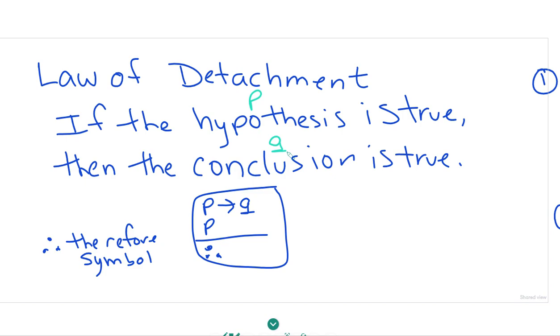We write this like this. If P, if the hypothesis, is true, then Q, the conclusion, is true. This says P is true, therefore Q is true. So we're going to use the law of detachment to determine some conclusions.